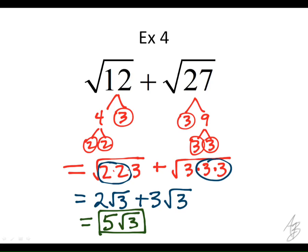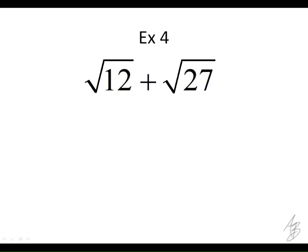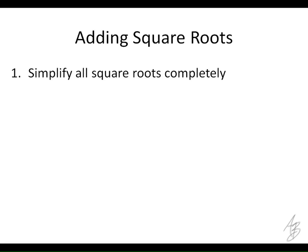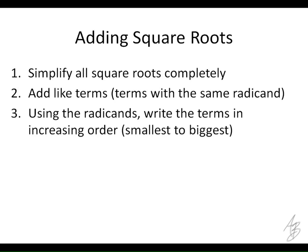Don't forget to box your answers. Any questions about that one? So I want you to write down the steps for doing these problems so you can use these notes as a reference during quizzes or tests. The first thing we do when adding or subtracting square roots is simplify all the square roots completely. Then we add the like terms together — those are terms with the same radicand. Finally, when we write our final answer, we look at the radicands and write them in increasing order from smallest to biggest.